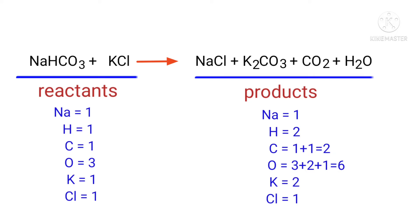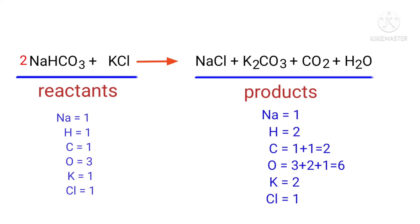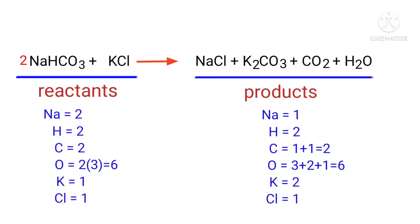In this equation we need to balance the hydrogen atoms first. To do this we need to put a coefficient of two in front of NaHCO₃. The hydrogen, carbon and oxygen atoms are now balanced.